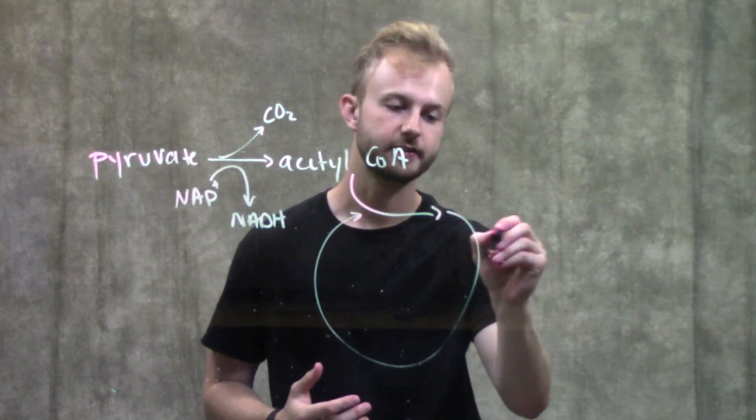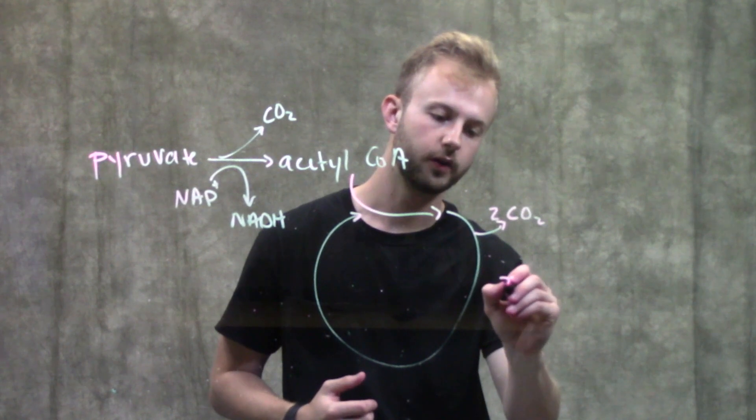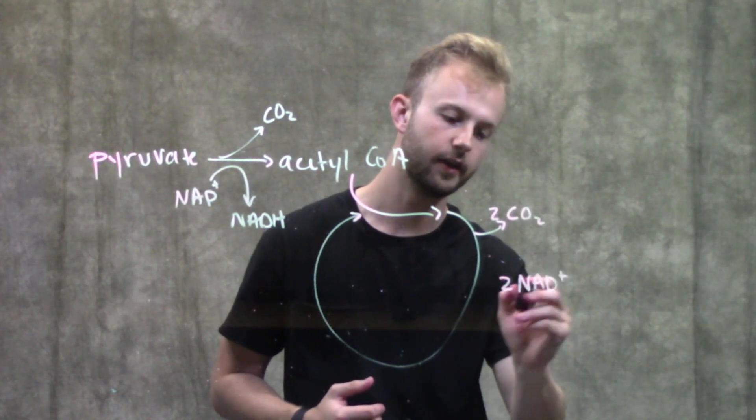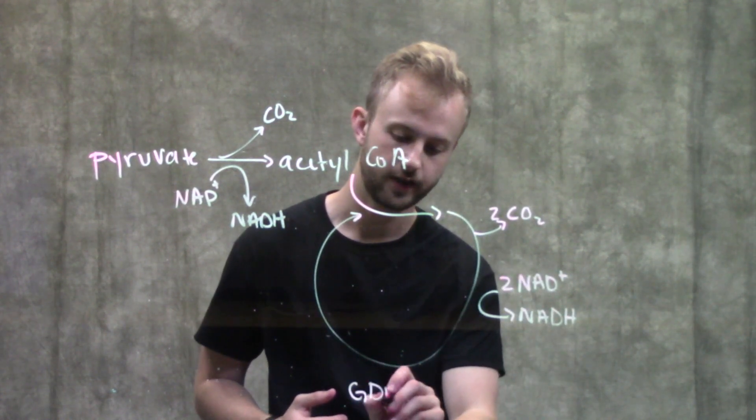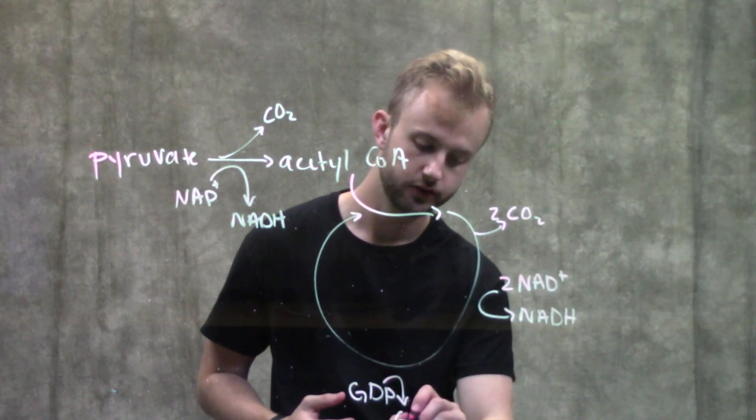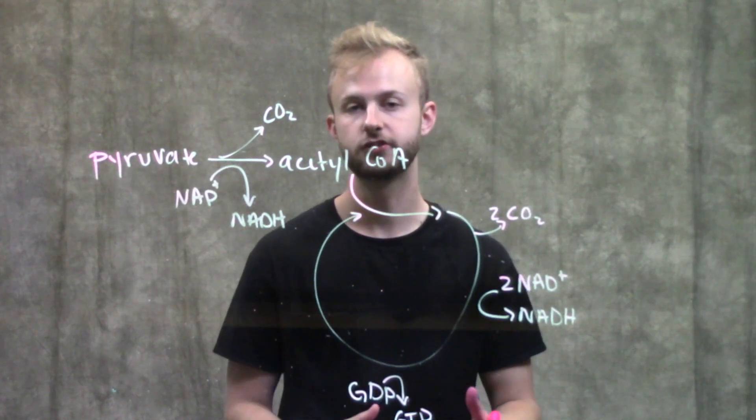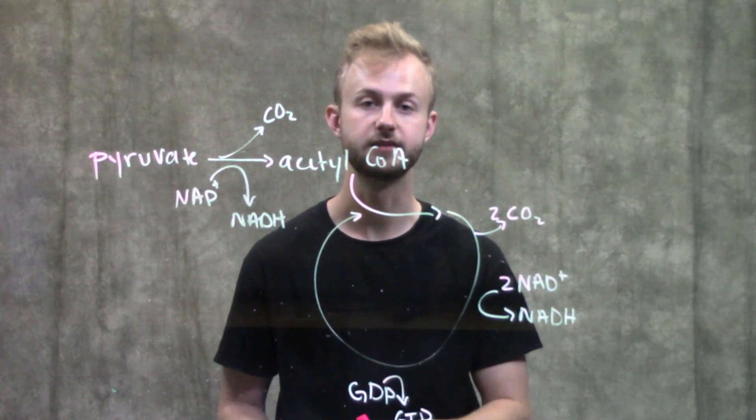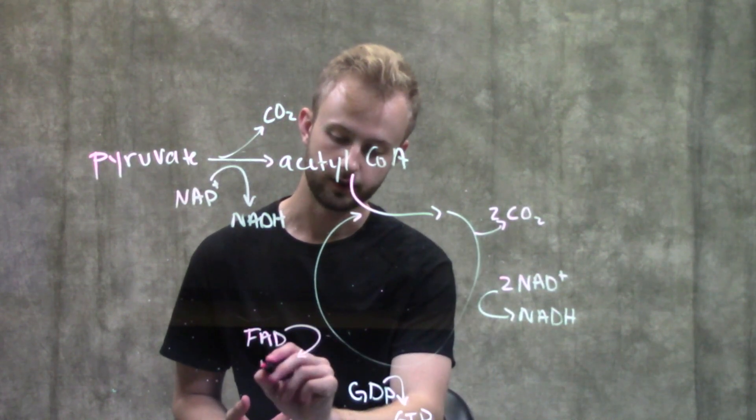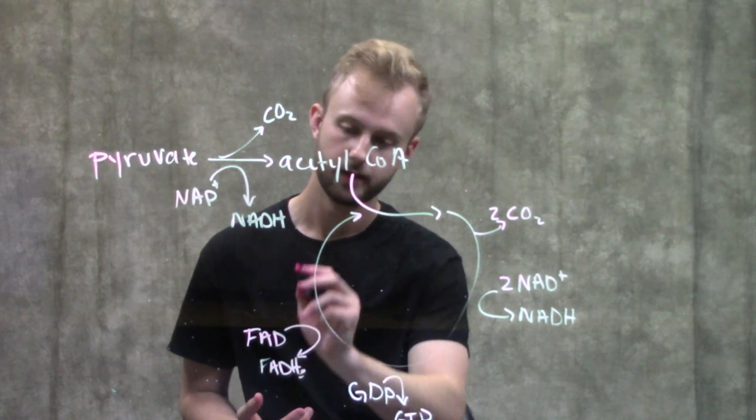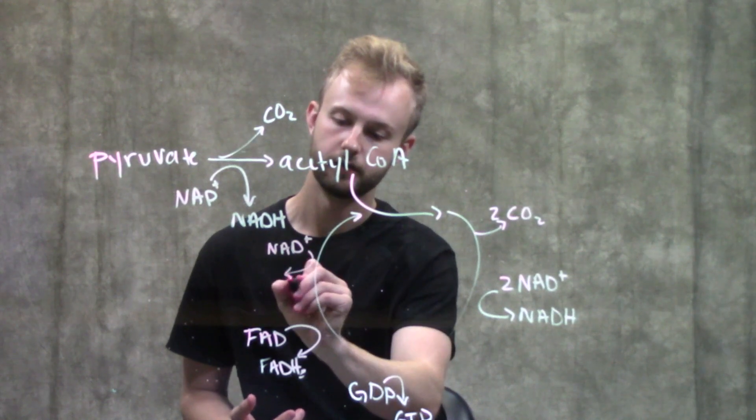So pretty early on in the citric acid cycle, we're going to lose two molecules of CO2. We're going to reduce two molecules of NAD+ to NADH. We're going to produce a GTP. GTP is an ATP equivalent, so our cells can use it just like they would ATP, or they can also use this GTP to regenerate ATP from an ADP. We're also going to produce a molecule of FADH2, and then lastly, we're going to produce one more molecule of NADH.